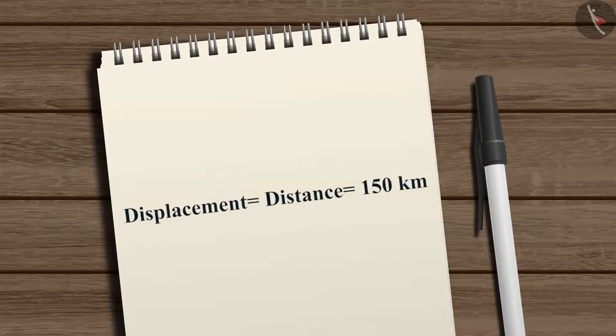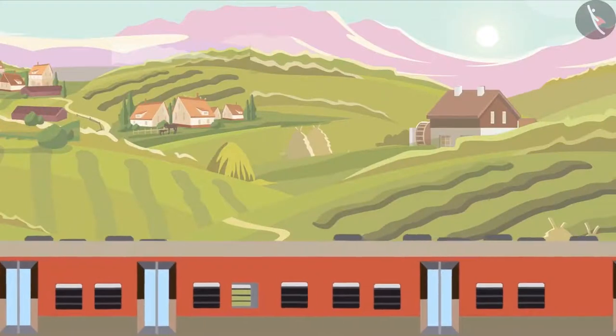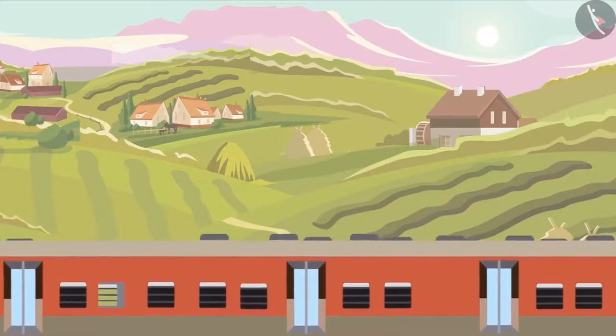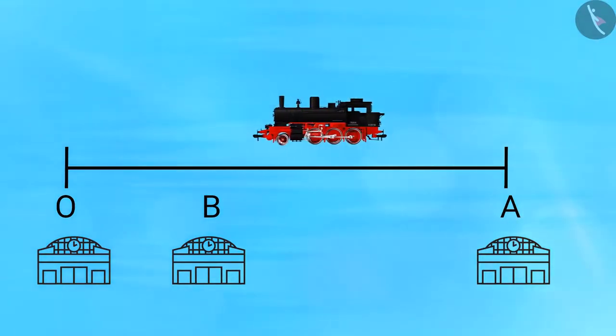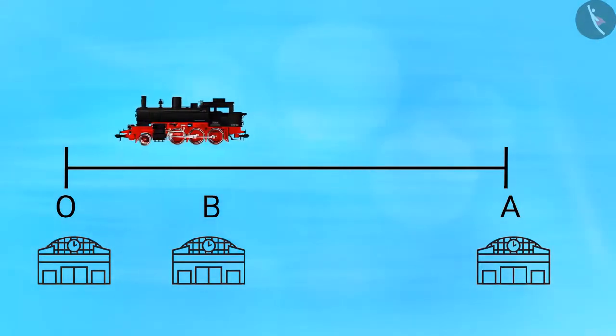Now, on the same day, it has to return to station O. It starts from station A and reaches back to station O via station B.